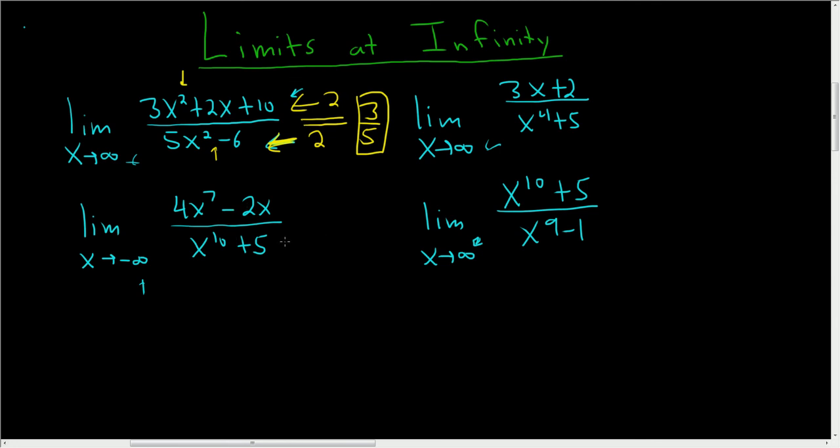Over here, the degree in the denominator is 10. The degree in the numerator is 7. When that happens, the answer is 0. Over here, again, bigger on the bottom, it's 4. Here it's 1, so the answer is 0.